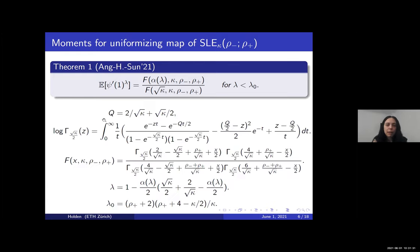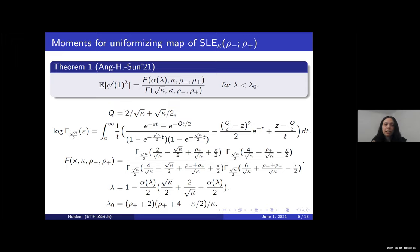Lambda-zero depends on kappa and also on rho-plus, which is the attractive force the curve has toward the right boundary arc. The work of Miller and Wu was the first to prove this threshold for SLE kappa rho, though there were earlier works considering the case of regular SLE kappa with rho-plus equal to zero.